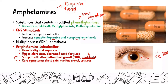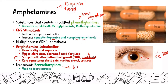When treating amphetamine intoxication, you're going to use benzodiazepines — a classic CNS depressant. Benzodiazepines are used to treat the seizures associated with amphetamines. A key point: benzodiazepines have a lower risk of respiratory depression compared to barbiturates. So you want to use benzos to decrease seizure occurrence. That's all you need to know about amphetamines for Step 1.